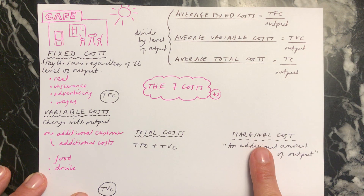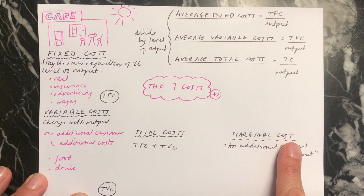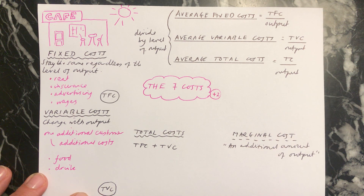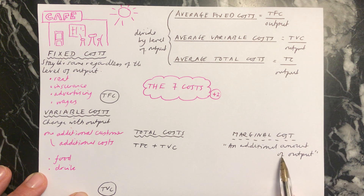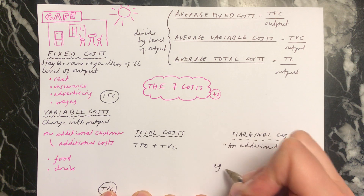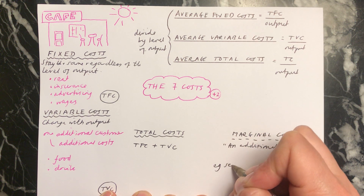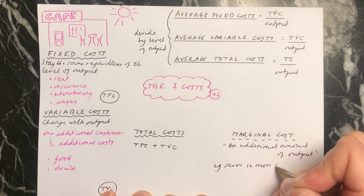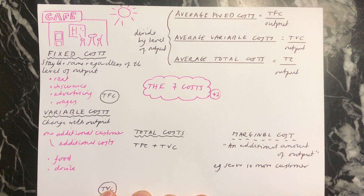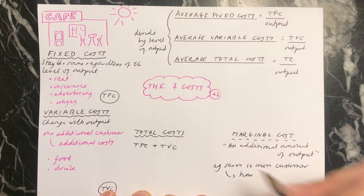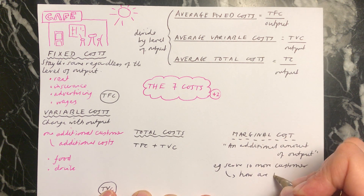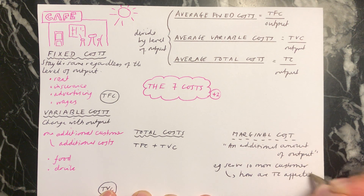The final piece of the jigsaw puzzle, which is a little bit different, is your marginal cost. Remember that in economics, when you're talking about the margin — like the margin on a piece of paper — it's an additional amount of something, in this case output. So for example, if you were to serve 10 more customers, you'd be asking what would this do to your total costs — so how are total costs affected?